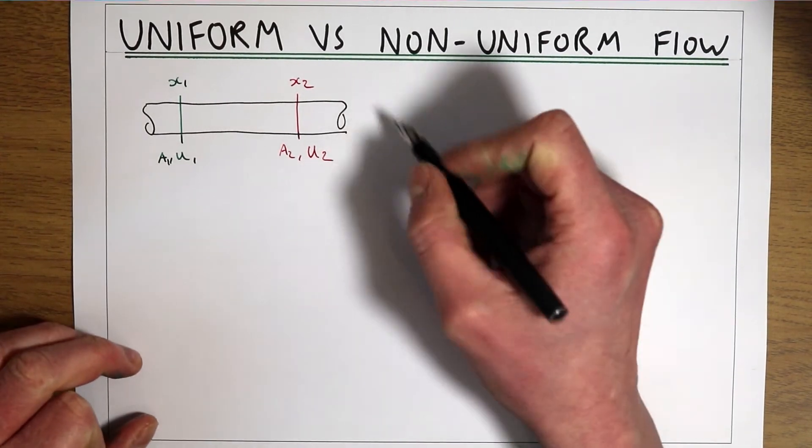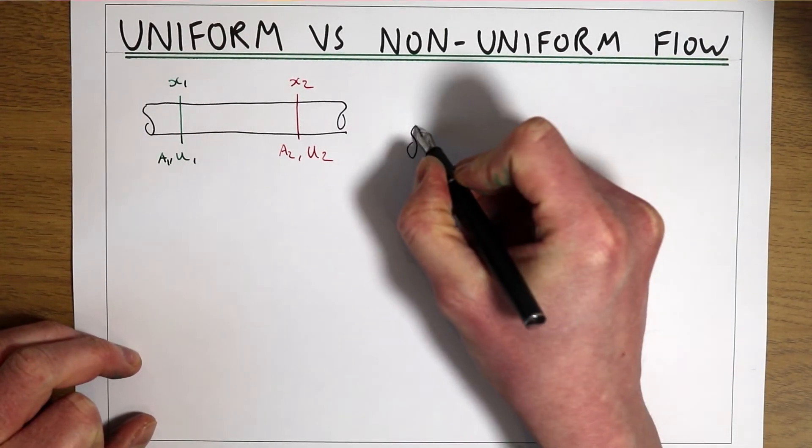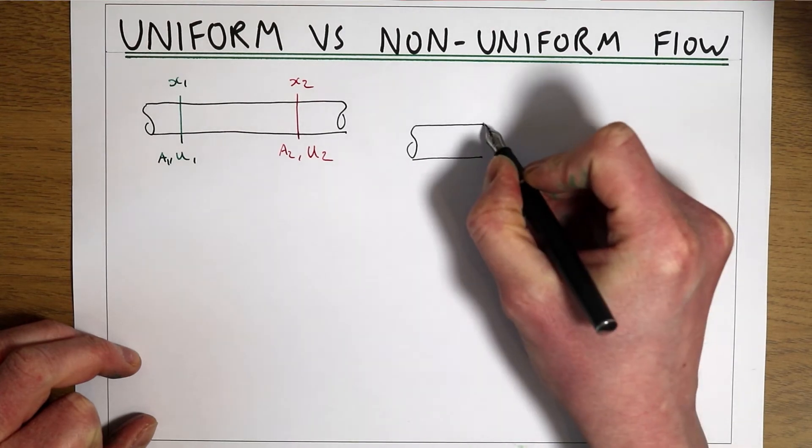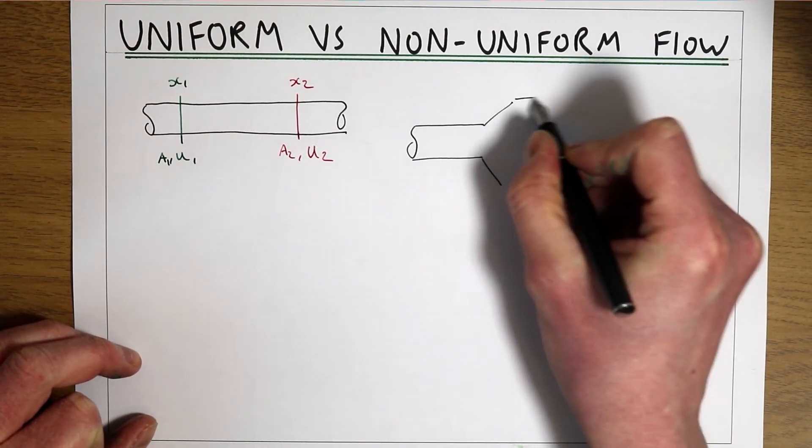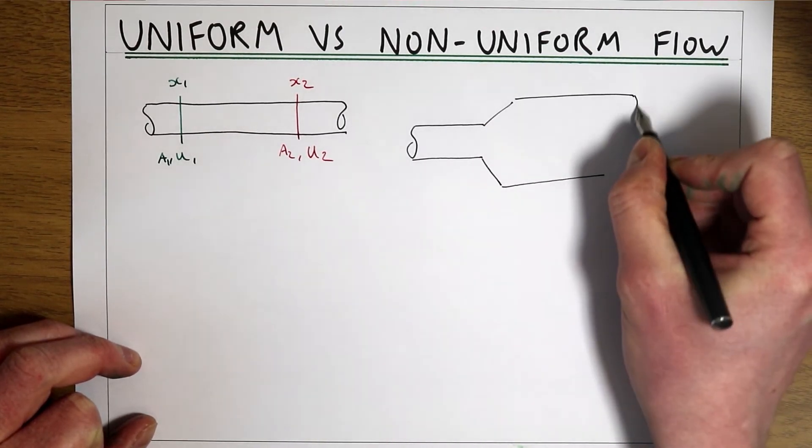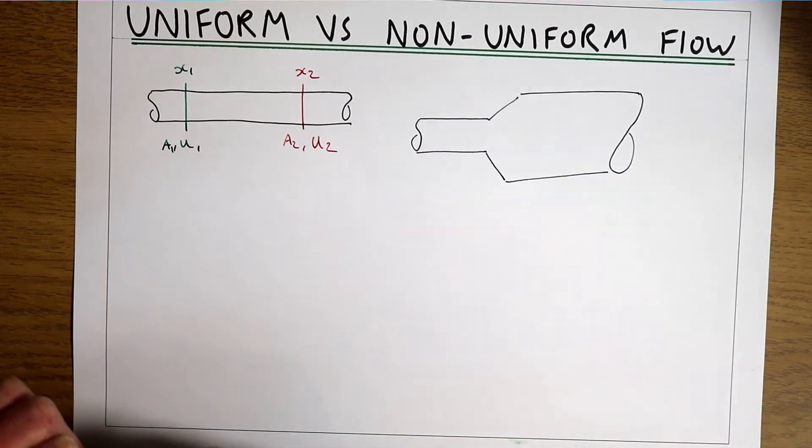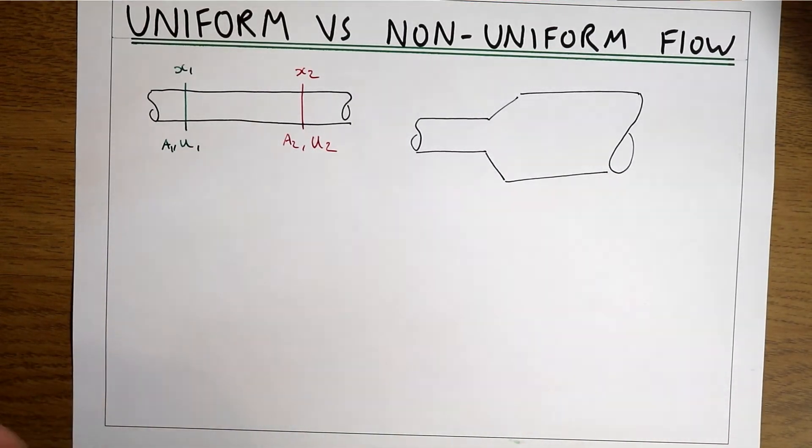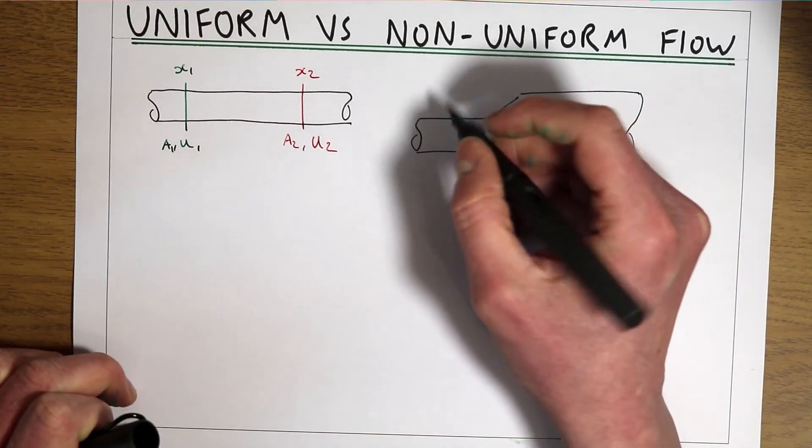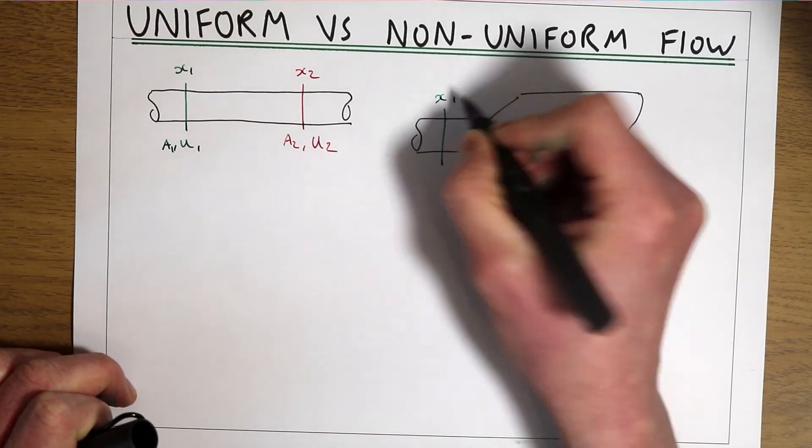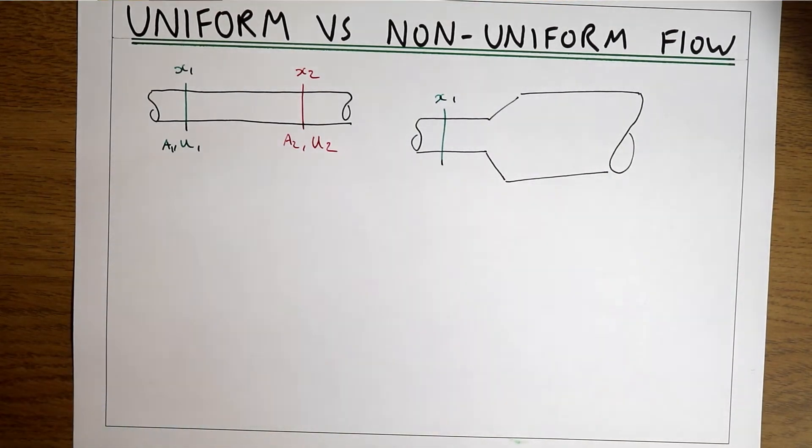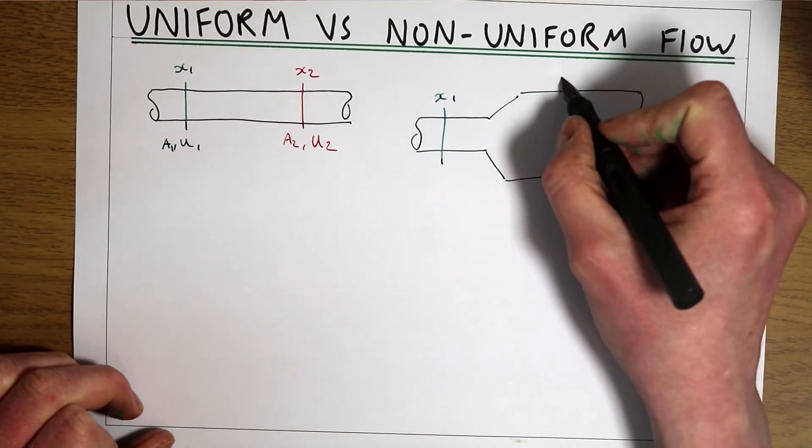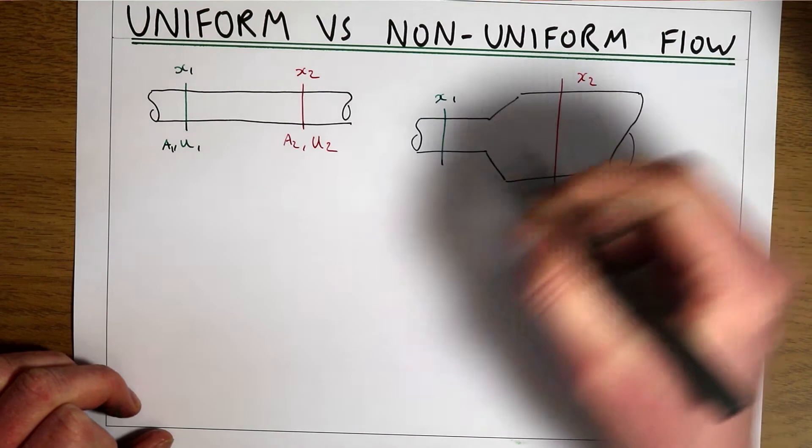The time when we're going to get a non-uniform flow is when we get variation in the pipe diameter. So if we have a case like this where the pipe diameter is either increasing or decreasing, then now we're going to have an instance where the parameters between x1 and x2 are going to be different.